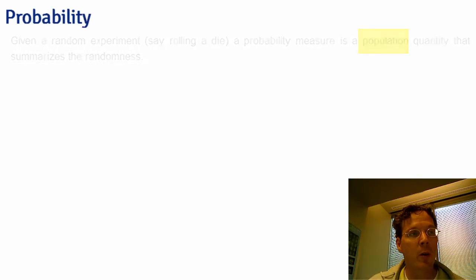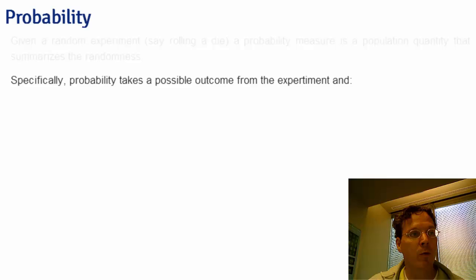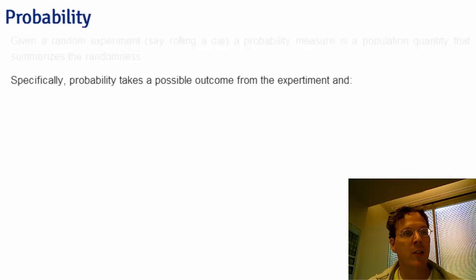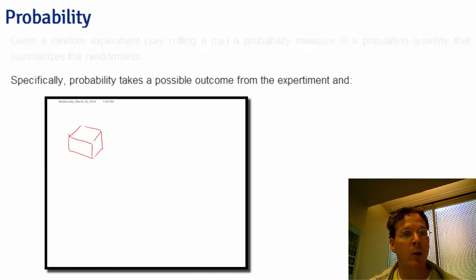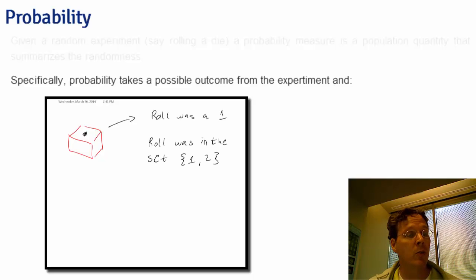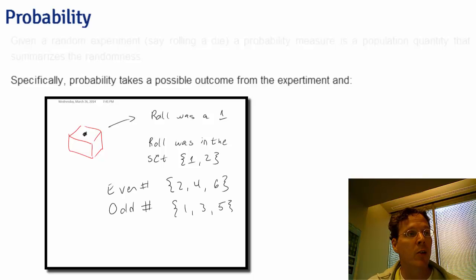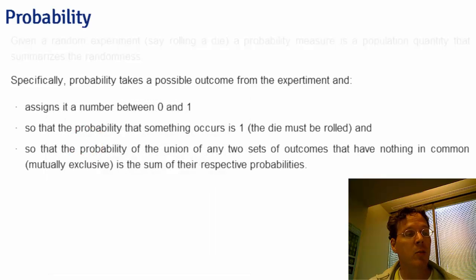Let's be specific about the rules that probability has to follow, so-called probability calculus. Probability operates on the potential outcomes from an experiment. For example, when you roll a die, you could get a one, or you could say the roll was in the set one or two, or the roll was an even number (two, four, six), or the roll was an odd number (one, three, five), and so on. So the probability is a function that takes any of these sets of possible outcomes and assigns it a number between zero and one.